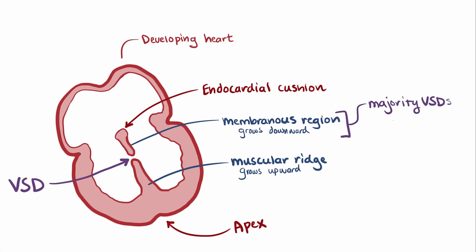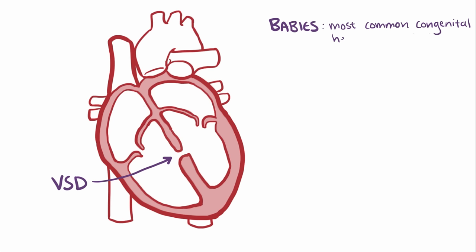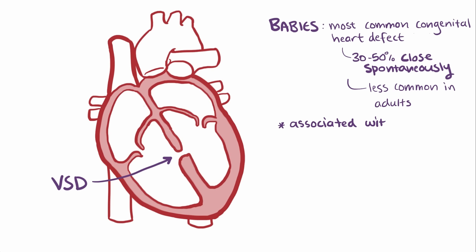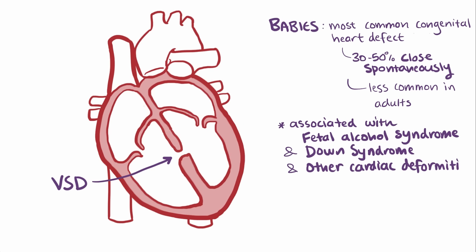Among babies, VSDs are actually the most common congenital defect overall, but 30-50% of VSDs can spontaneously close during childhood, which makes ventricular defects less common with adults. VSDs are associated with fetal alcohol syndrome and Down syndrome, and are often associated with other cardiac deformities as well.